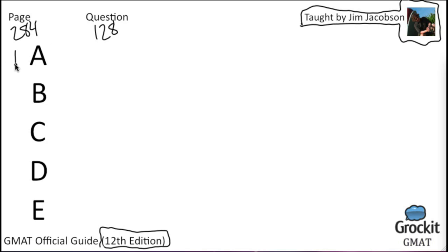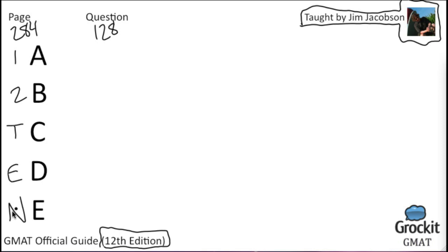As always, I write down that answer choice A is statement one alone, B is statement two alone, C is together — they are sufficient but individually they are insufficient. D is either one is sufficient on its own, and E is neither one is sufficient on its own, even in conjunction they are still insufficient. These reminders that the answer choices are always the same.